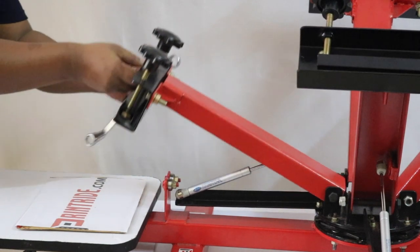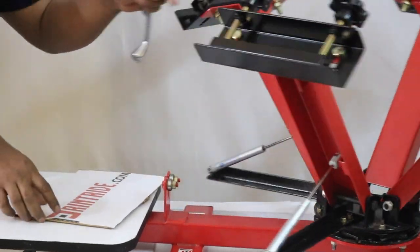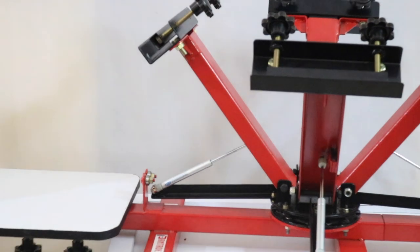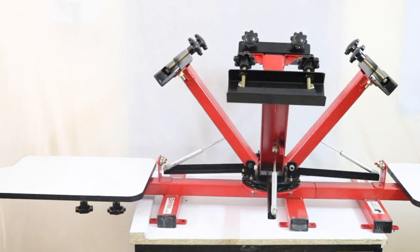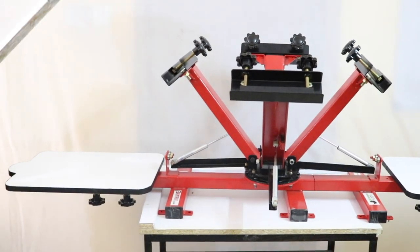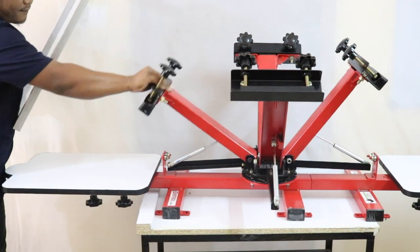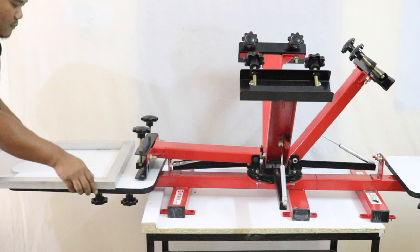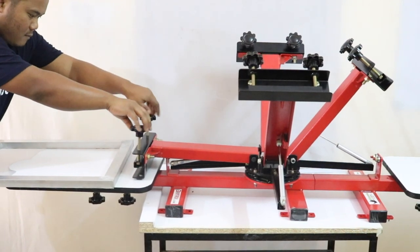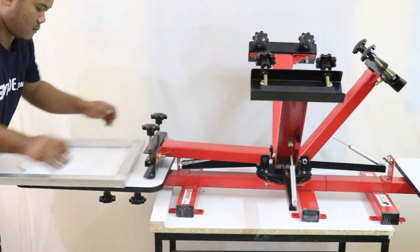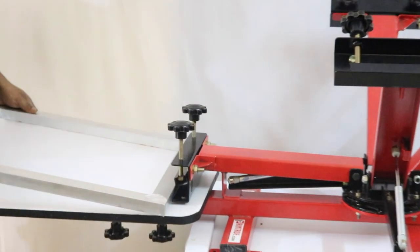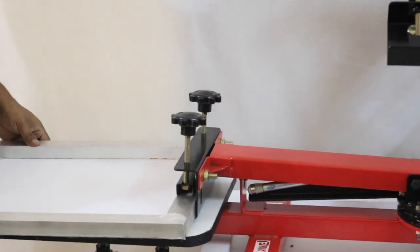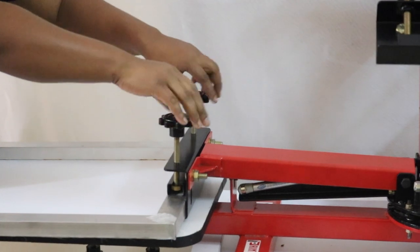Now check it properly before putting the frame. Always remember you have to adjust the off contact before printing. This is the aluminum frame. So we are putting the frame in the arm. Before putting you have to loosen up the screw, then again tighten it up.